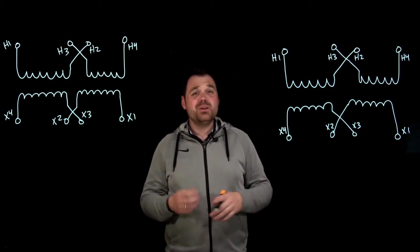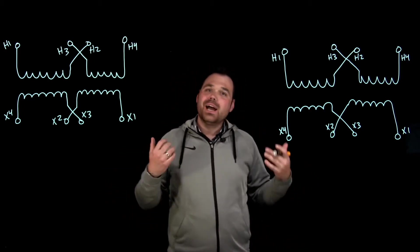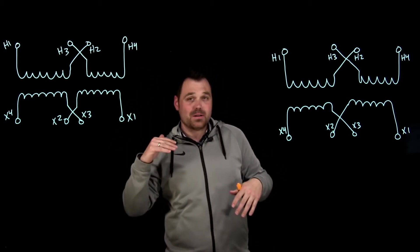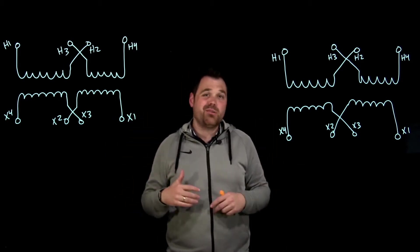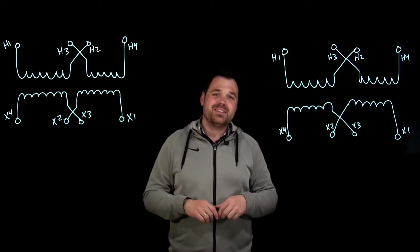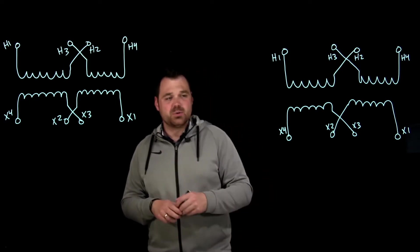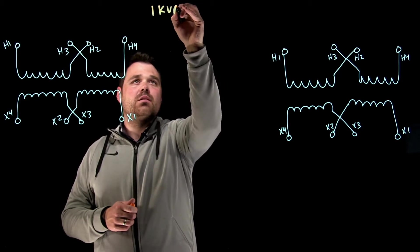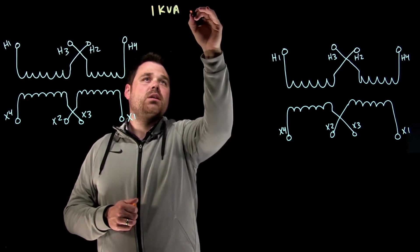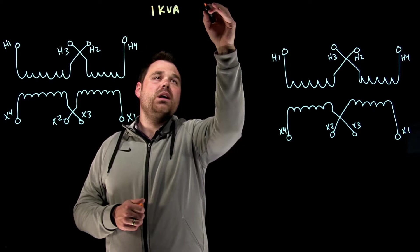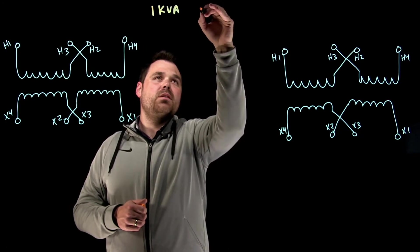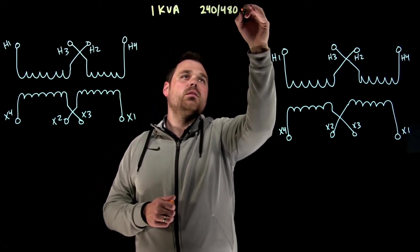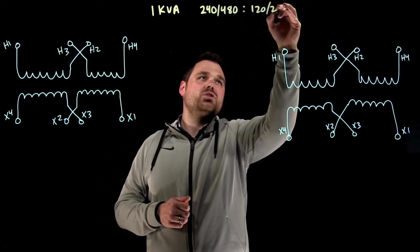Now, either can be used as a step up or a step down and you can do a series on the top and a parallel on the bottom or a parallel on the top or a series, like whatever configuration you wanna set these up in, we'll just talk about the different configurations that are possible. So these transformers here, these are one KVA per transformer and they are a 240 slash 480 to 120 slash 240.